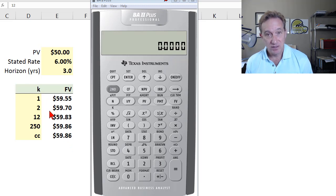If k is 2, two periods per year, that would be semi-annual compound frequency. k is 12, that's monthly compound frequency. And then I have here 250, which is a common assumption, 250 trading days per year. So that would be daily compound frequency.